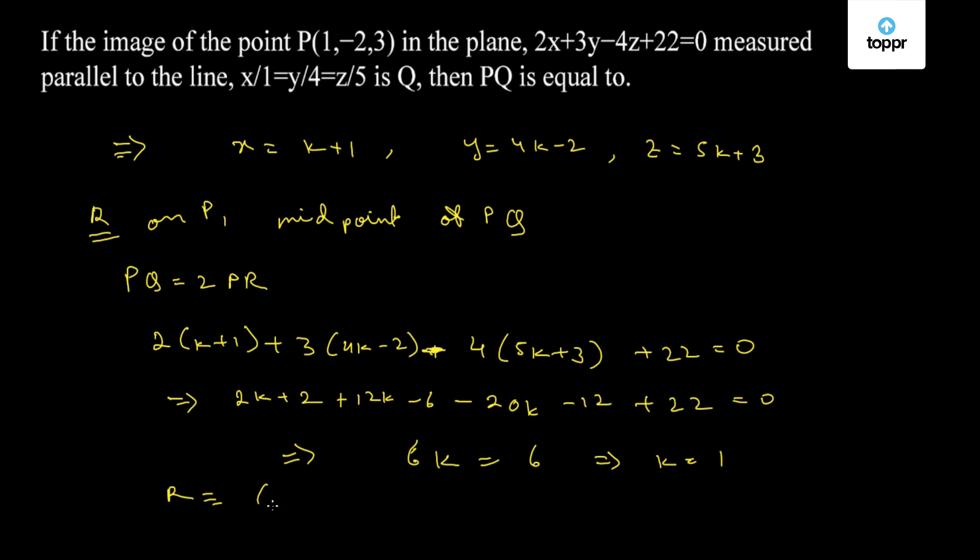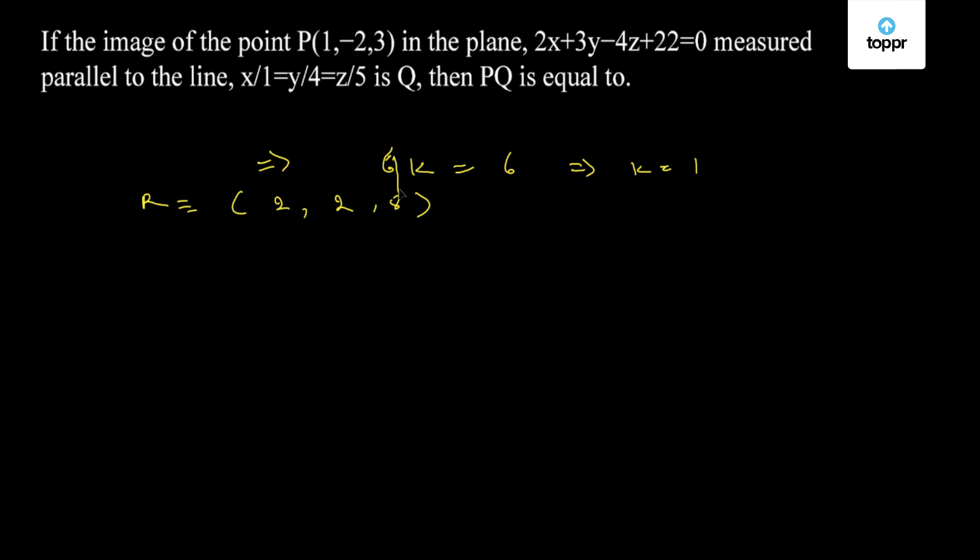So the coordinates of R are (2, 2, 8). Therefore the distance PR will be equal to √[(1-2)² + (-2-2)² + (3-8)²] = √[1+16+25]